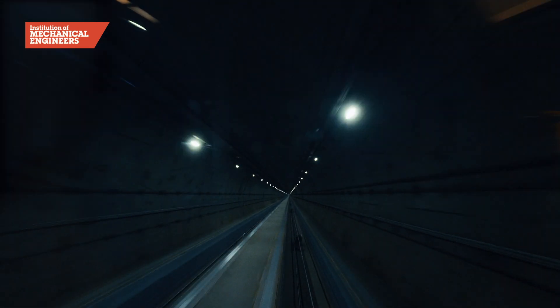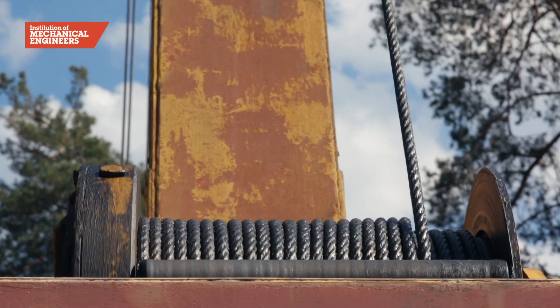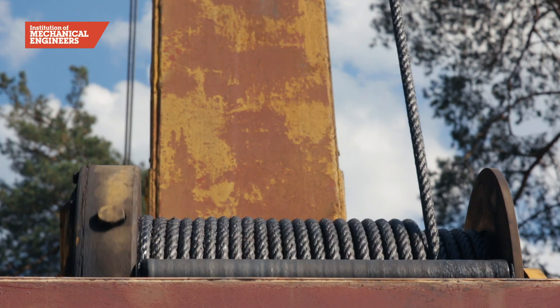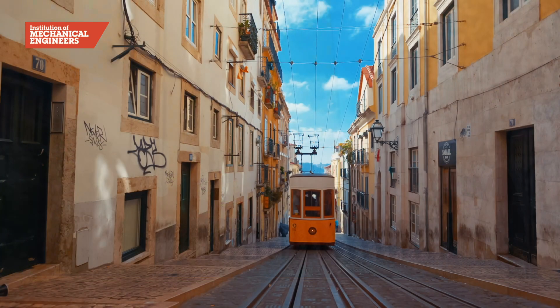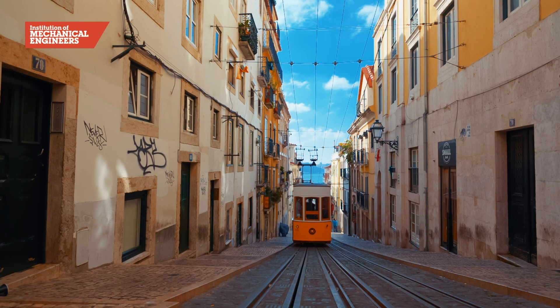Funicular railways solve this problem by pulling the trains up the slope with a cable. This means the steel wheels don't need to have traction, they are simply there to guide the train along the tracks.